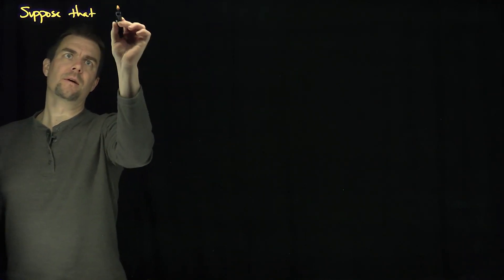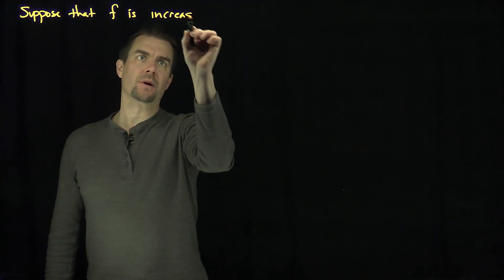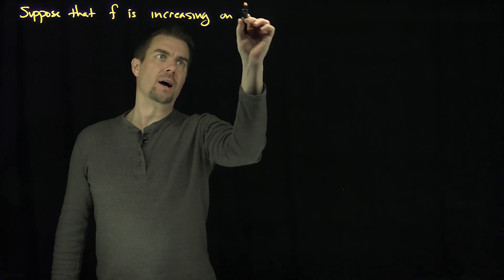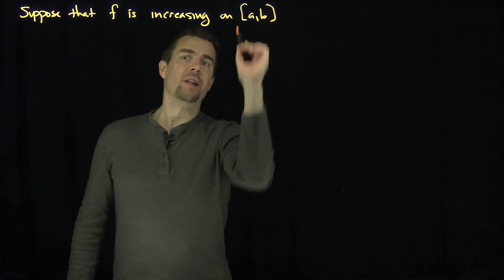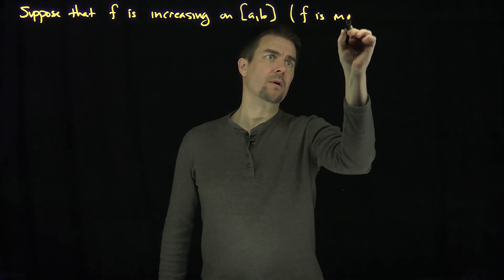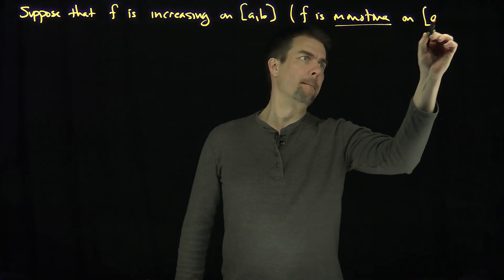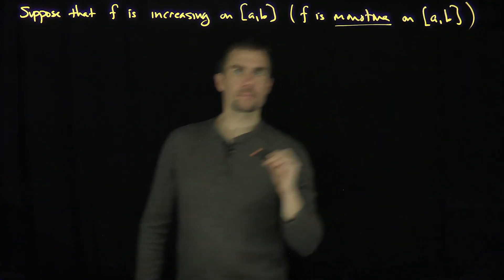Hello, students. In this video, we'll prove that every monotone function is Riemann integrable. Let's suppose that f is increasing — the decreasing case is similar — so f is increasing on [a, b]. In other words, f is monotone on [a, b].